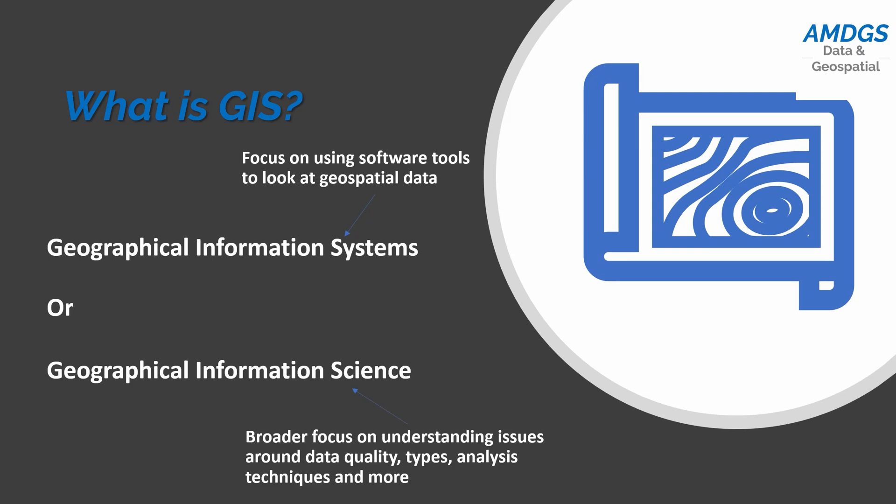The other term you might come across is geographical information science. Essentially the way I always explain it is that geographical information science is the broader field focusing on issues around data quality, data types, the different types of analysis we can use for spatial data, and understanding how and why they work. We need some basic understanding of geographical information science to use GIS, but most of that understanding is things that as geography teachers you will already have.